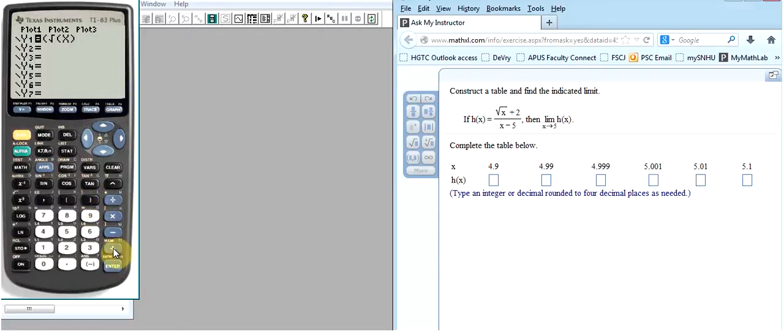Then I'll continue typing plus 2, and then I'll close that first parentheses. And the reason that I'm including that second close parentheses is I want the calculator to understand that the only thing in the numerator of this function is the square root of X plus 2.